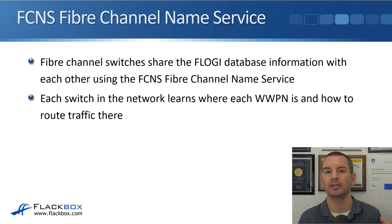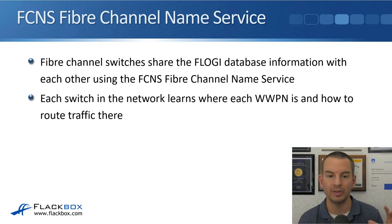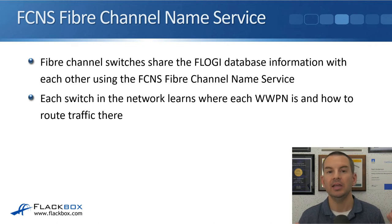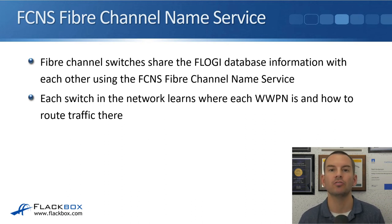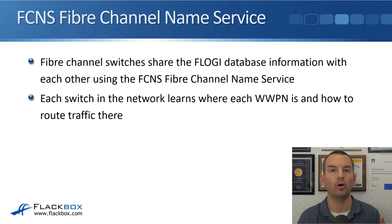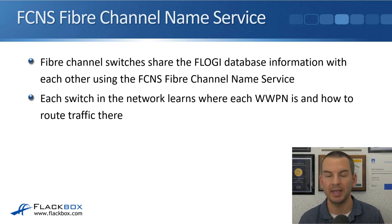The next thing that happens is that information will be shared with the other switches in the network. Fibre Channel switches share the FLOGI database information with each other using FCNS, which is the Fibre Channel Name Service. Each switch in the network learns the information that was in each other's FLOGI database — it learns where each WWPN is and how to route traffic there, because each switch knows about the other switches and their domain IDs. Because the FCID is based on the domain ID as the first part, now all of our switches know how to send traffic to all of the different WWPNs in the network.